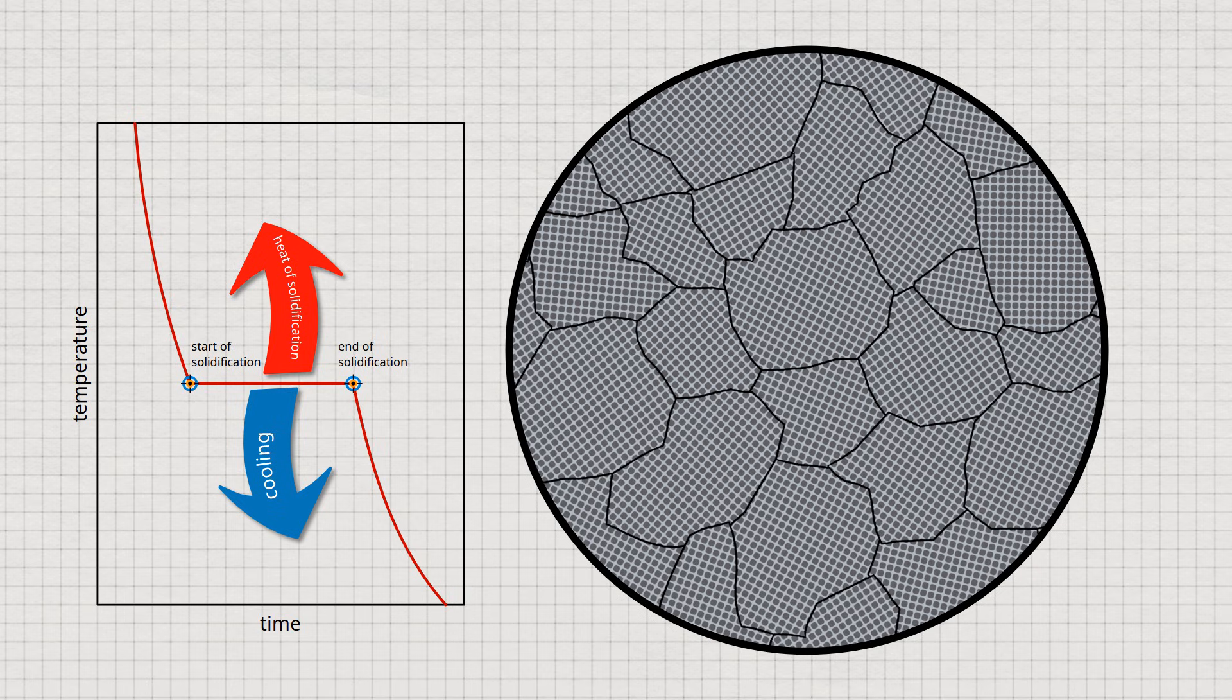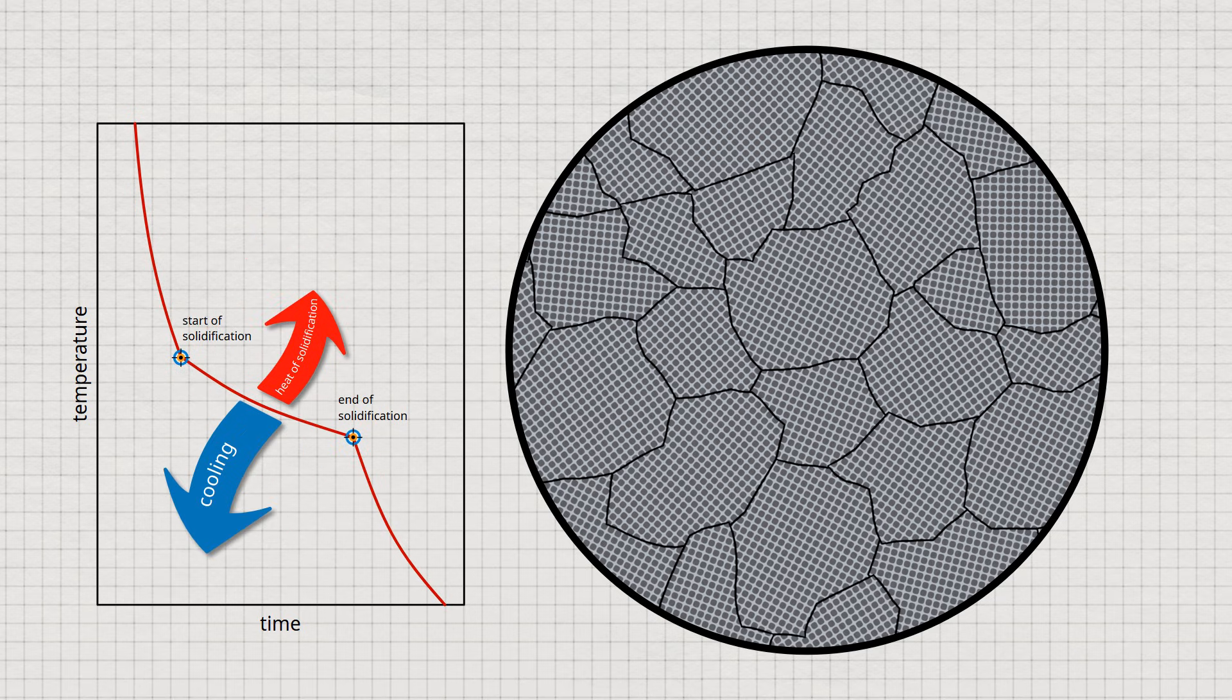In principle, mixtures also release heat during solidification. However, due to the mutual chemical influence of the substances, the heat of crystallization can generally no longer fully compensate for the cooling. As a result, the temperature drop is not completely stopped, but only slowed down. Thus, the cooling curve becomes flatter during solidification.